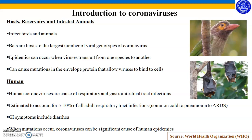With regards to humans, human coronaviruses cause both respiratory and gastrointestinal tract infections. They are a relatively common cause of illness, estimated to account for approximately 5 to 10 percent of all adult upper respiratory tract infections. They can cause a wide range of respiratory illnesses, from the common cold to pneumonia and acute respiratory distress syndrome, or ARDS, as well as a variety of signs and symptoms, with some strains causing more significant illness than others.